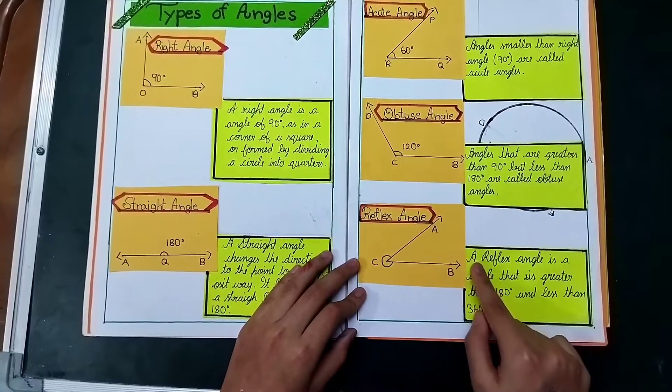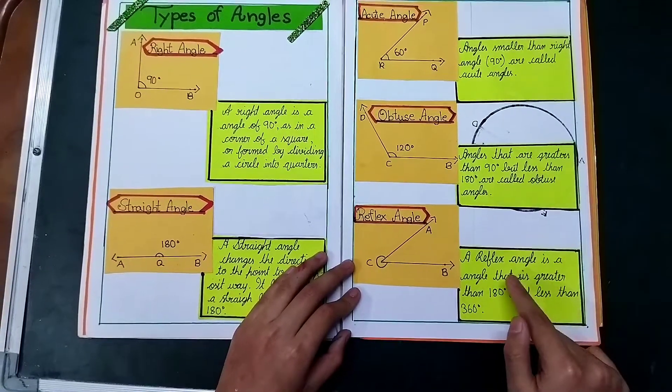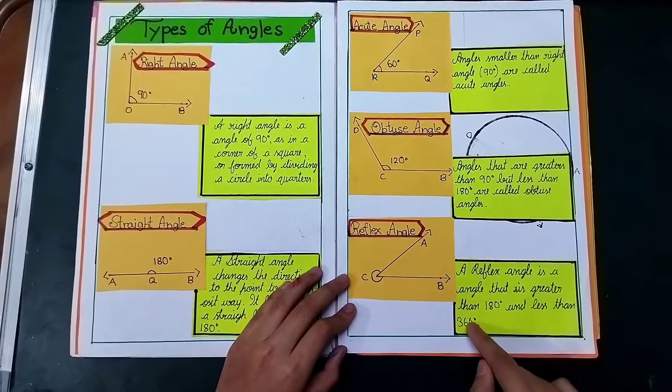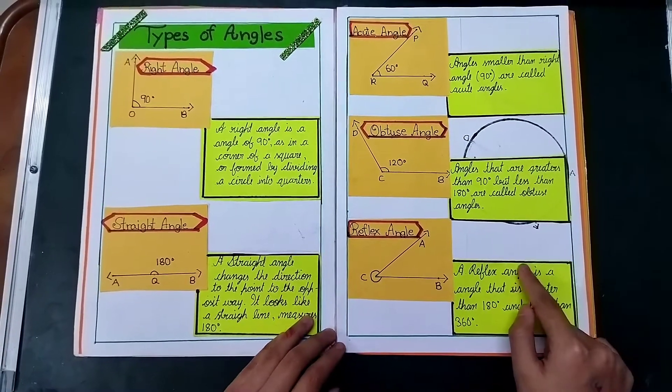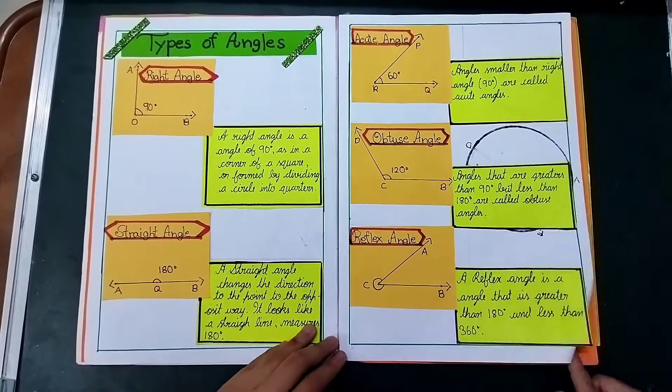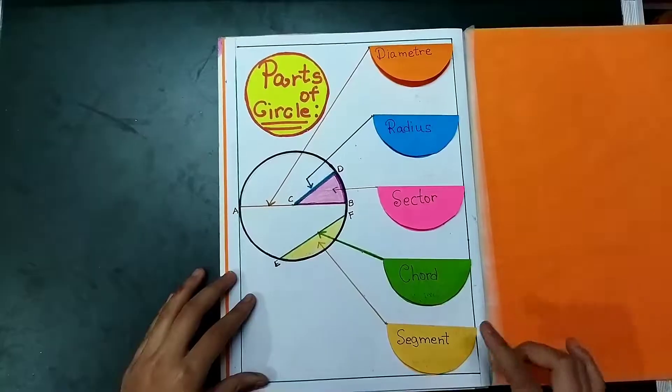Now reflex angle. A reflex angle is an angle that is greater than 180 degree and less than 360 degree. Here is the definition of reflex angle. Now let's turn to parts of circle.